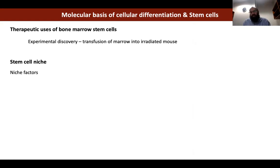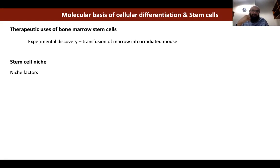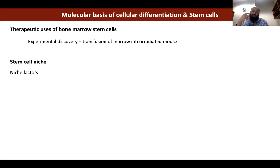Scientists discovered that bone marrow transplant — which has been going on for many decades — actually works because of stem cells. They only found out relatively recently, about 10–20 years ago, that stem cells in the bone marrow, when transplanted into a patient (either from their own bone marrow or from a nearby relative), lead to the formation of blood cells.